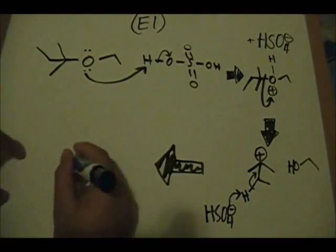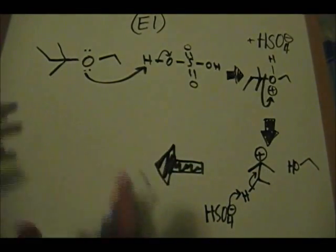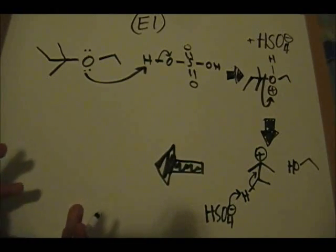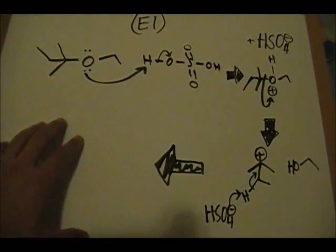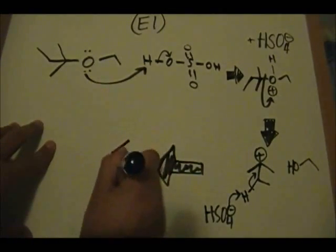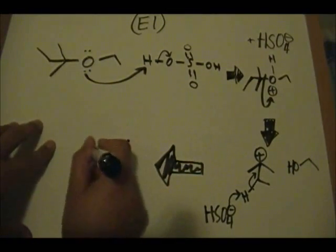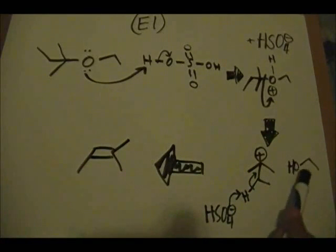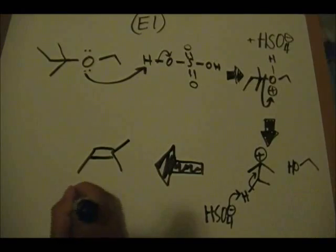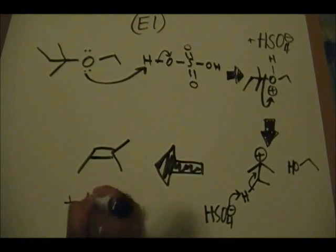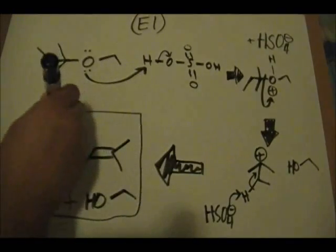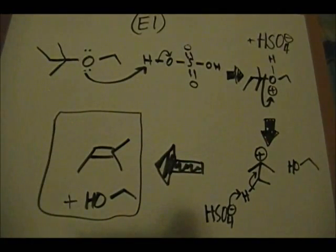Now you have your alkene — rearranged so it looks like the product drawn before the board was erased. We generate this alkene from this step, and we also form our alcohol. This alkene plus alcohol is your product.